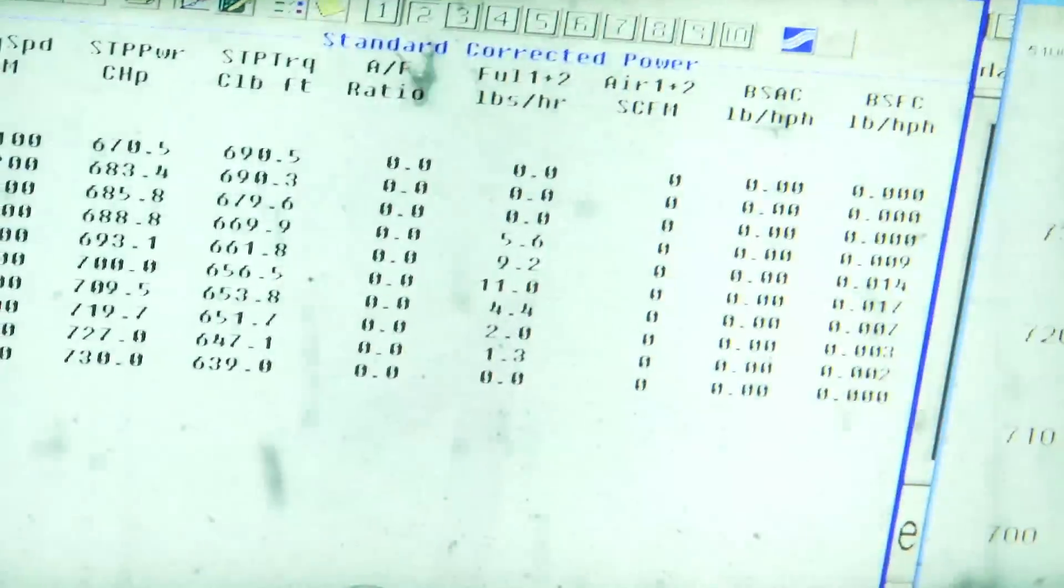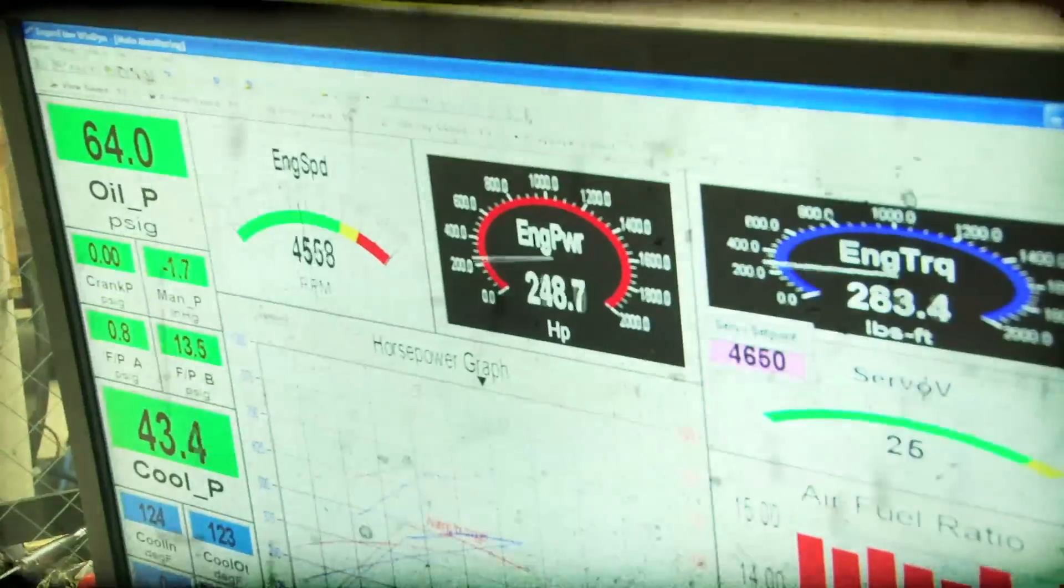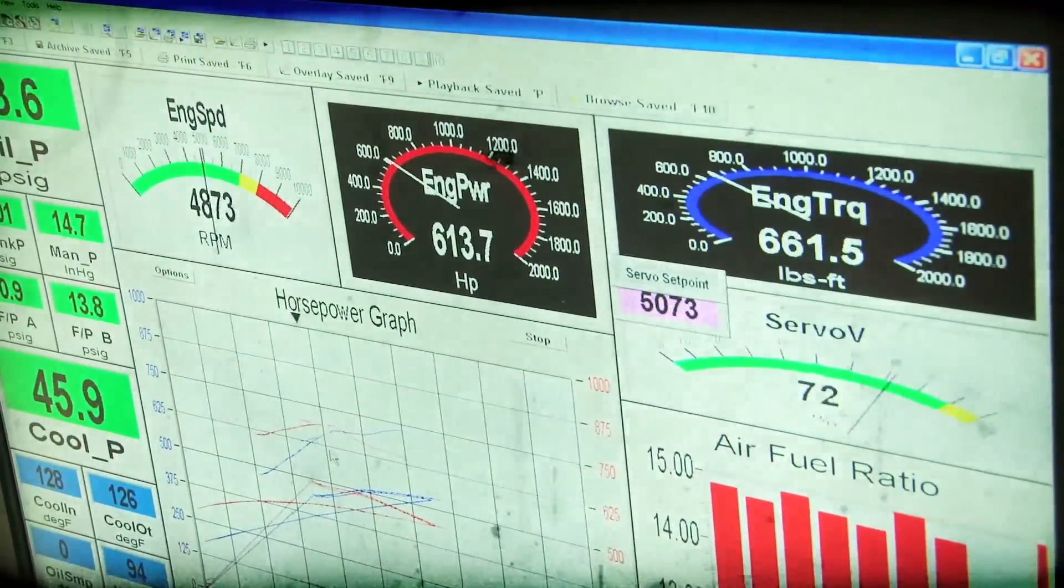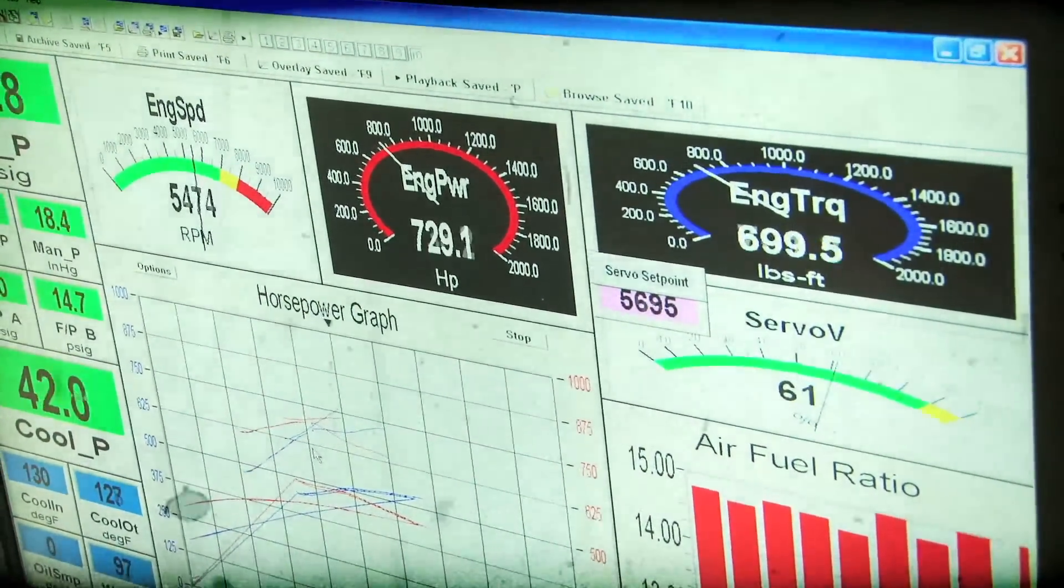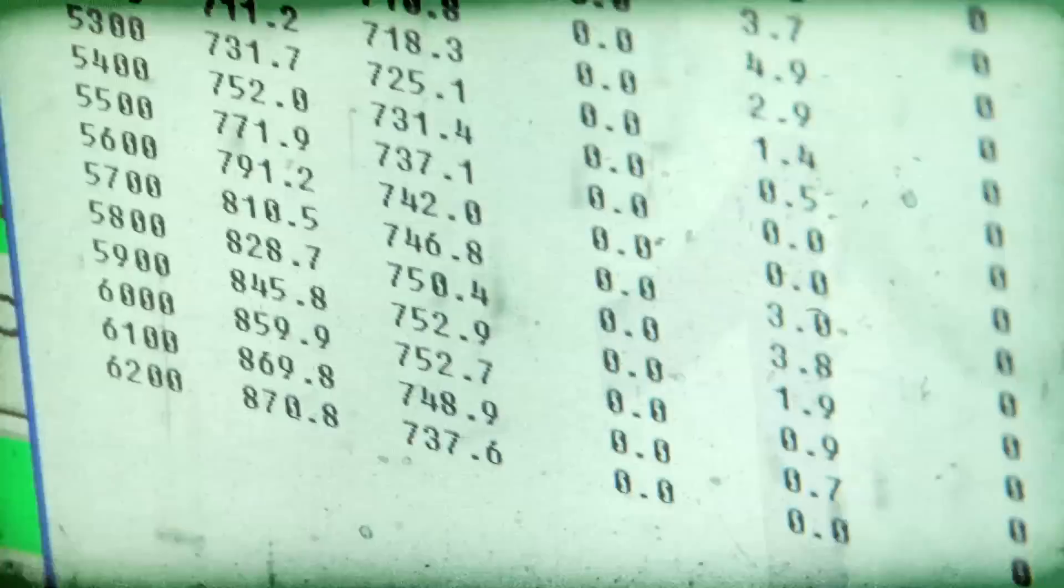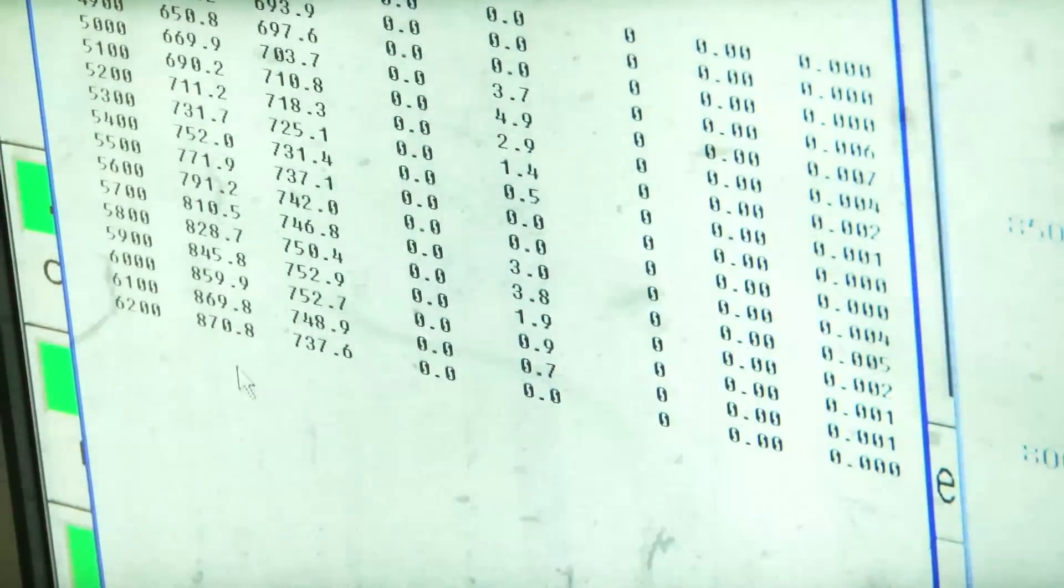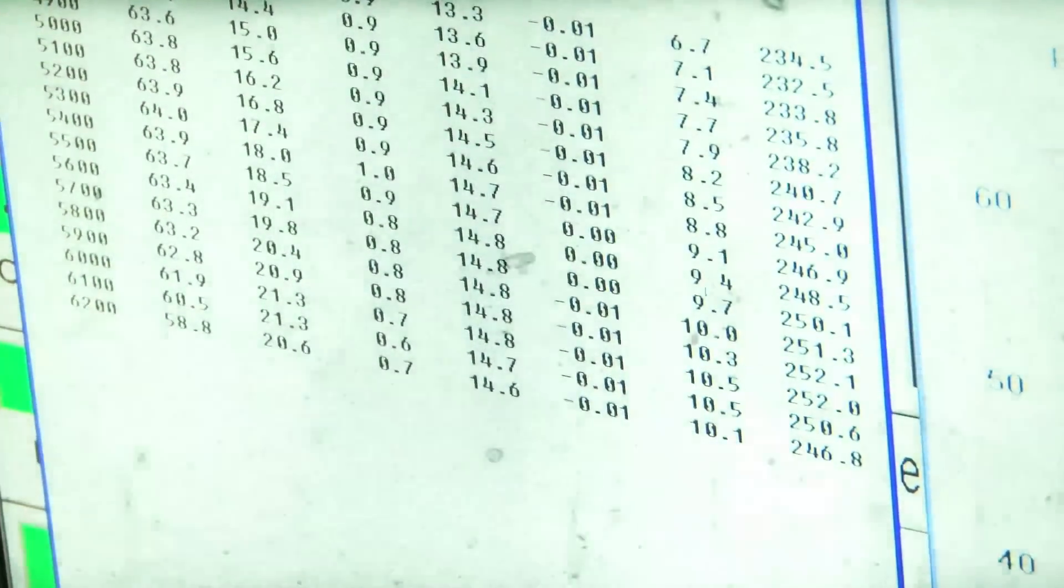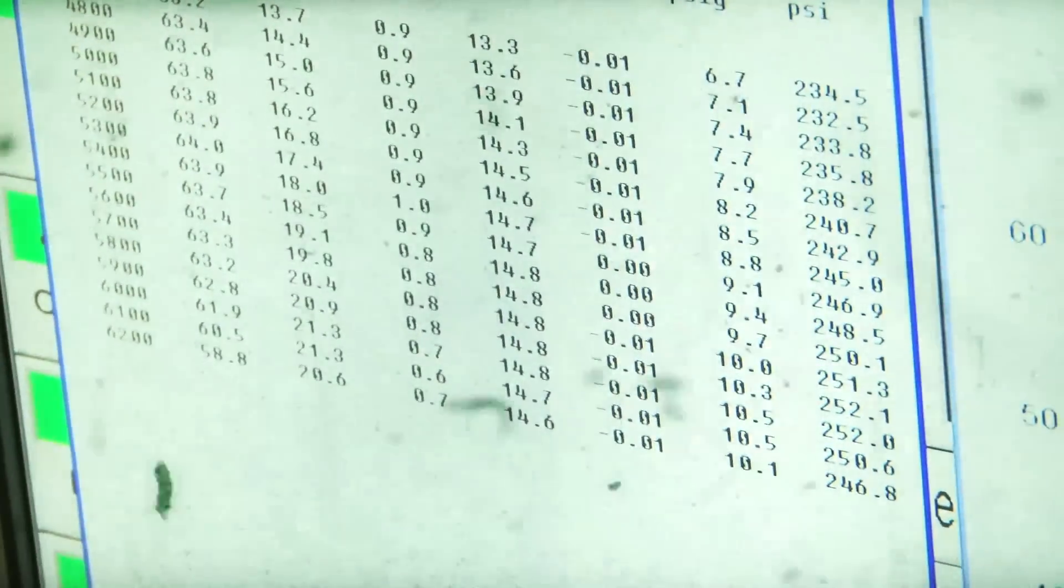730 horsepower, 690 foot-pounds of torque. 870 horsepower at 10 pounds of boost, 699 foot-pounds of torque. 6.7 to 10 pounds of boost, so got that handled.